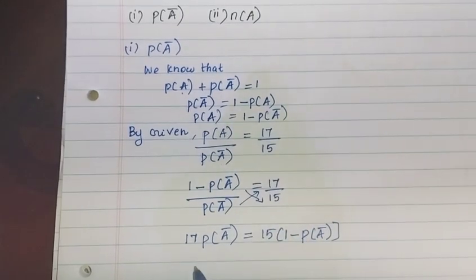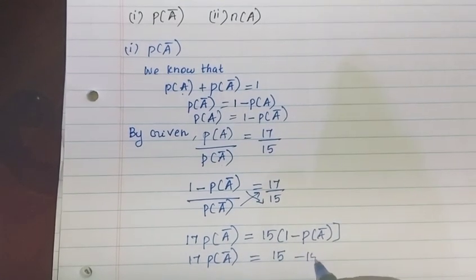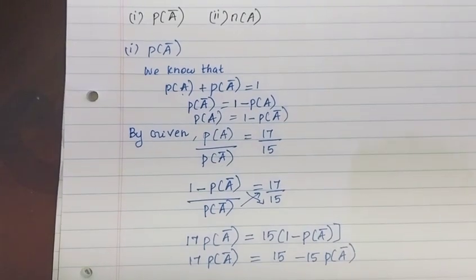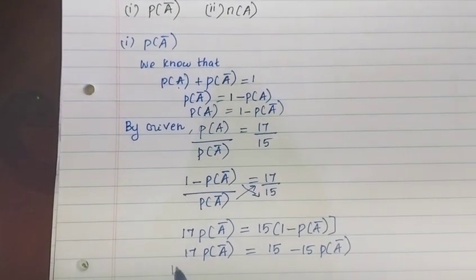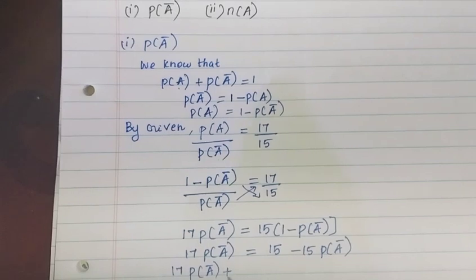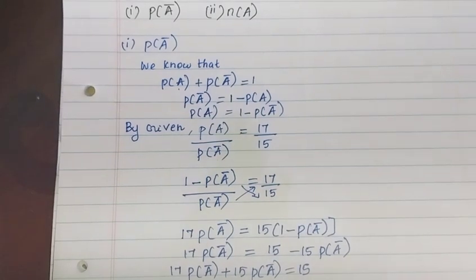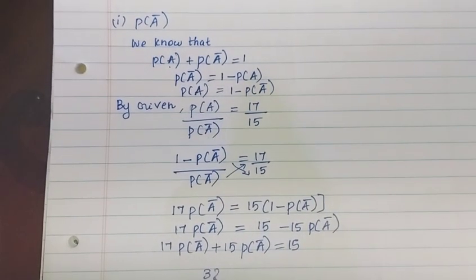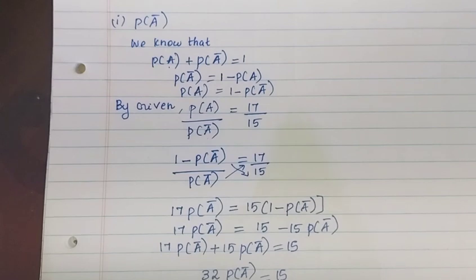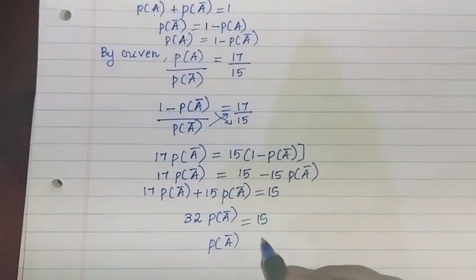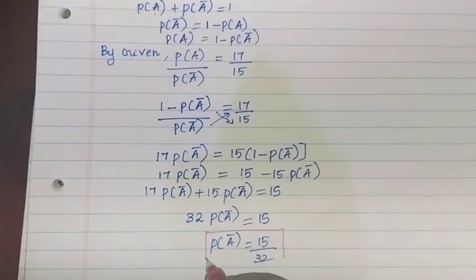Expanding: 17 times P of A complement is equal to 15 minus 15 times P of A complement. Collecting terms gives the value of P of A complement. This is the first answer.